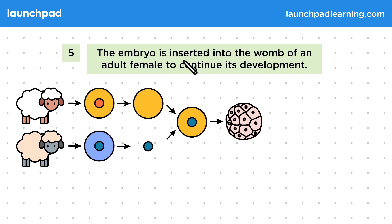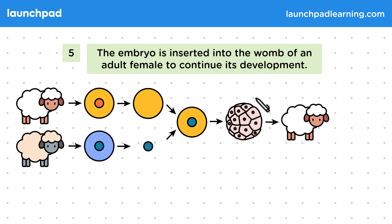The embryo is inserted into the womb of an adult female to continue its development. We take this embryo and transplant it into an adult.